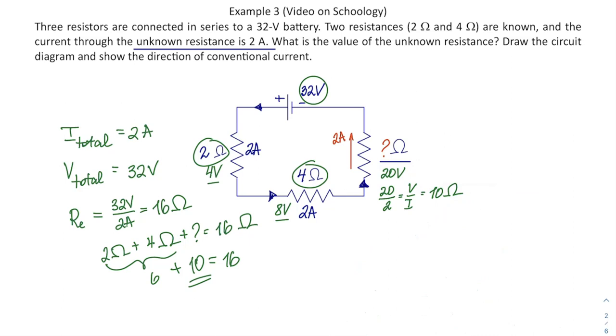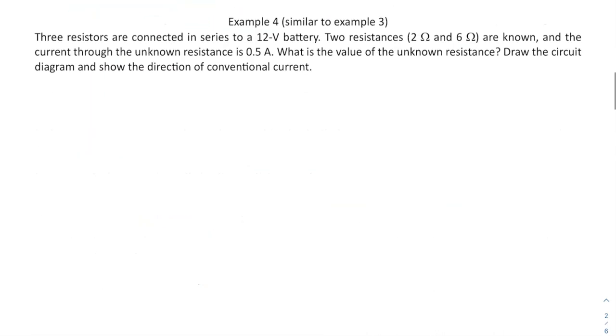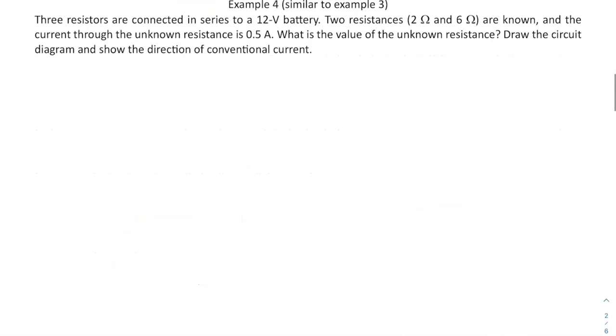All together, this is example number 3. And after you have completed this, you can go on to example 4, which is very similar. I just changed the value for my two resistors, 2Ω and 6Ω. Voltage through the battery is 2V. And the third resistor has the current of 0.5A. All right, good luck with that.